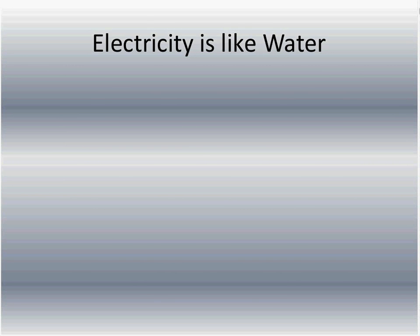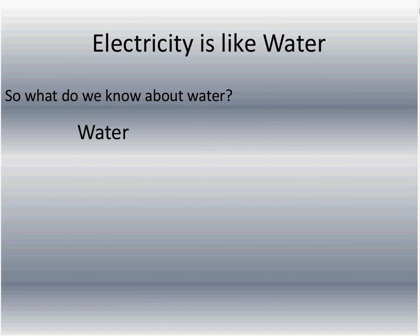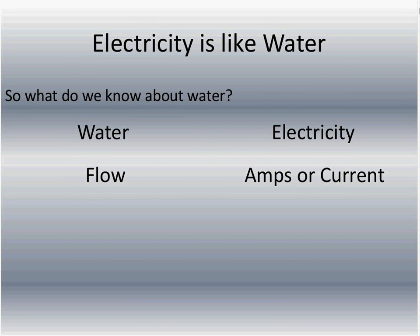Electricity is a little bit like water. What do we know about water? If we compare water to electricity: water has flow — flow is what does the work. With electricity, we call it amps or current.